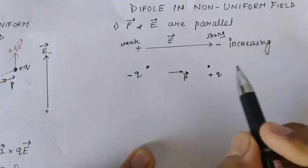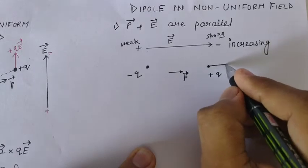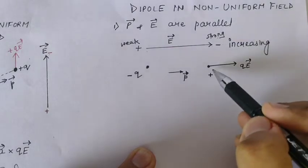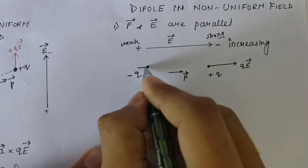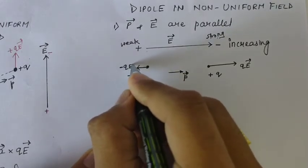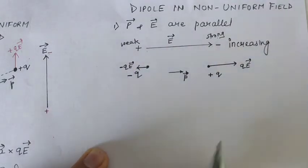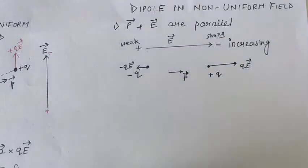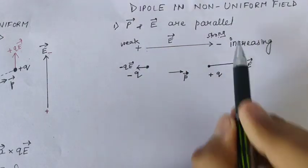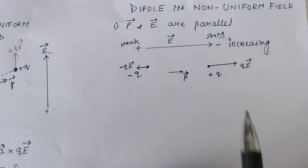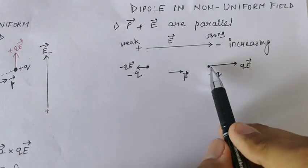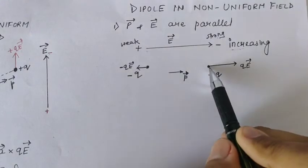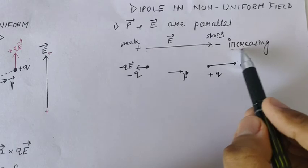The electric-field-directed force on the positive charge is qE. A strong field gives a strong force and a weak field gives a weak force — represented by a long arrow and a short arrow respectively. The resultant force is in the direction of the longer arrow. So when the dipole moment is in the same direction as the increasing field, the net force is in the direction of increasing field.